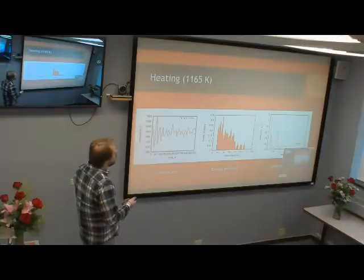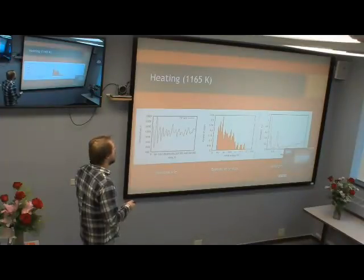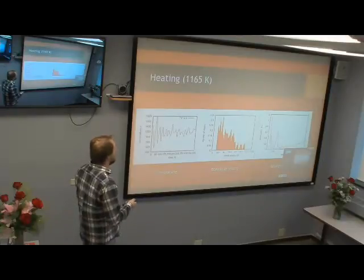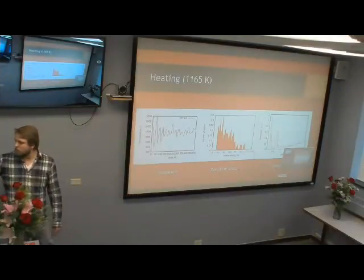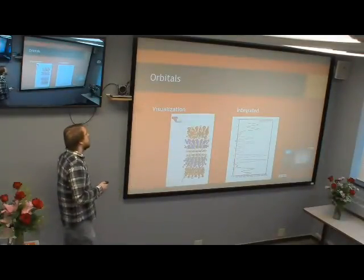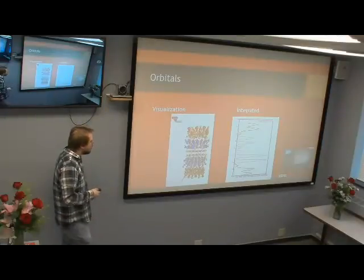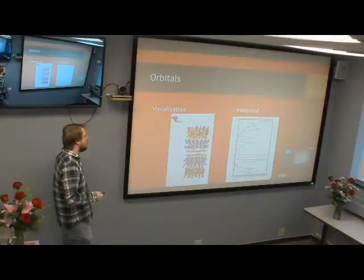The absorption spectra again seem to agree with what I see in the density of states — a sharp peak up here that could occur due to transitions in that region, and then lower points that correspond to forbidden transitions. Here I have a visualization of the orbitals of the PN junction after heating. You can see localization around the different dopants, but in this case the HOMO is actually localized around the N-dopant and the LUMO is localized around the P-dopant.